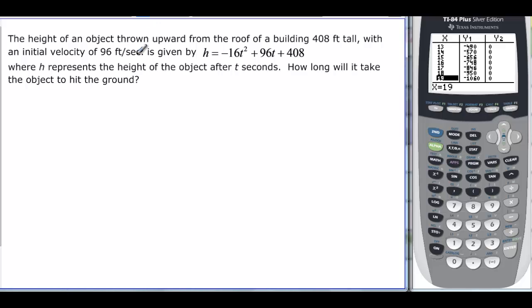So we have this object here that's being thrown and when it hits the ground, it's going to look something like this. It's going to go up in the air and come back down and hit the ground, and when it hits the ground the height is equal to 0 feet because it's on the ground.